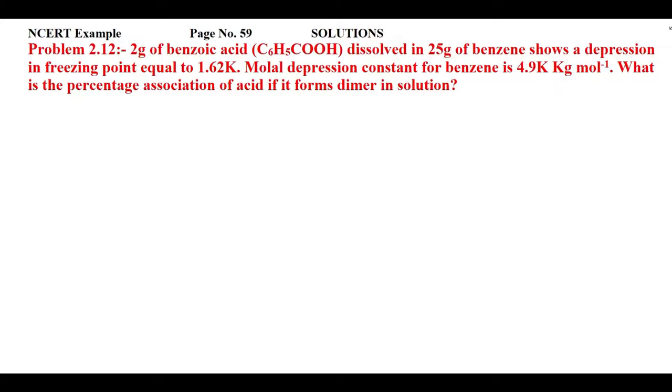In this problem, we have a depression in freezing point of 1.62 Kelvin observed. The molar depression constant for benzene is 4.9 Kelvin kg per mol. It is given that the solute — benzoic acid — forms a dimer in solution. We have to find the percentage association.